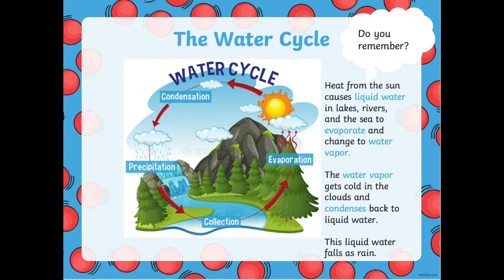Earlier in the year, we learned a little bit about evaporation and condensation when we were learning the water cycle. Heat from the sun causes liquid water in lakes, rivers, and the sea to evaporate and change to water vapour. The water vapour goes into the air and gets cold in the clouds, then it condenses back to liquid water. This liquid water then falls as rain. You can see the cycle of evaporation and condensation in this picture of the water cycle.